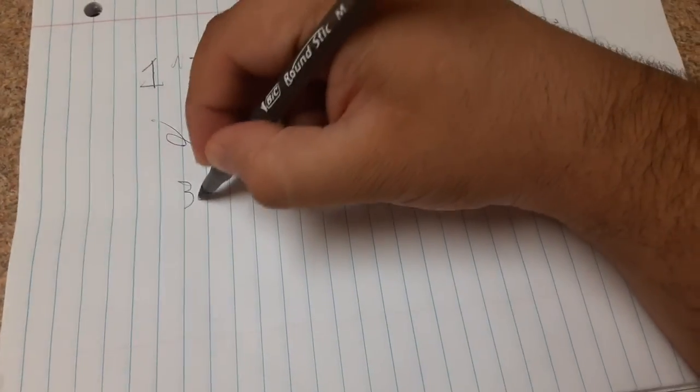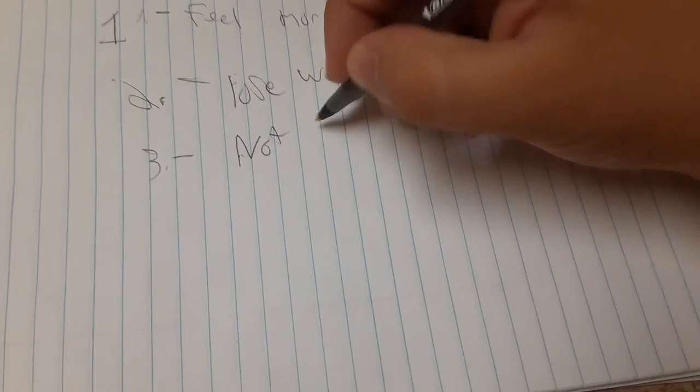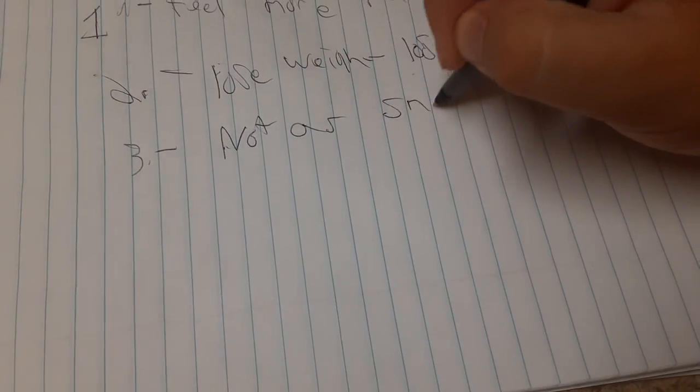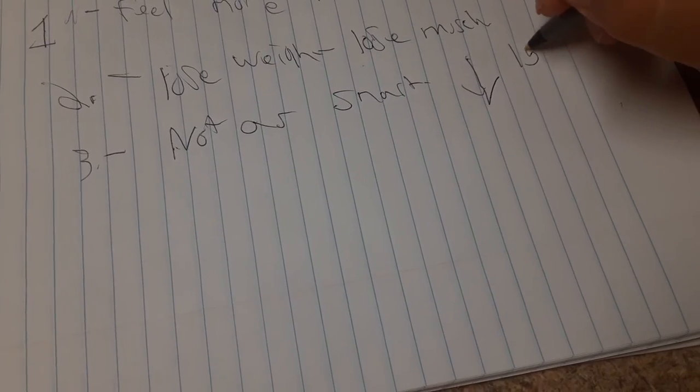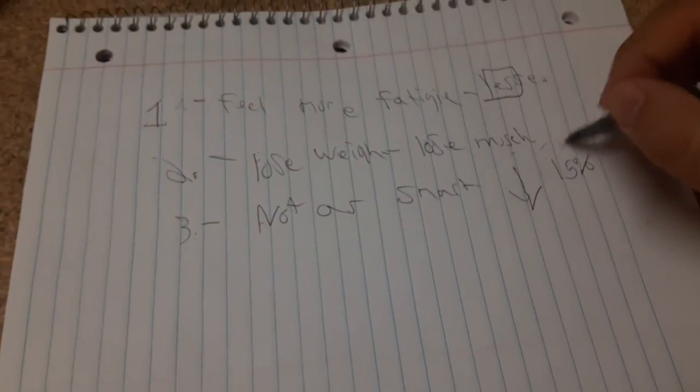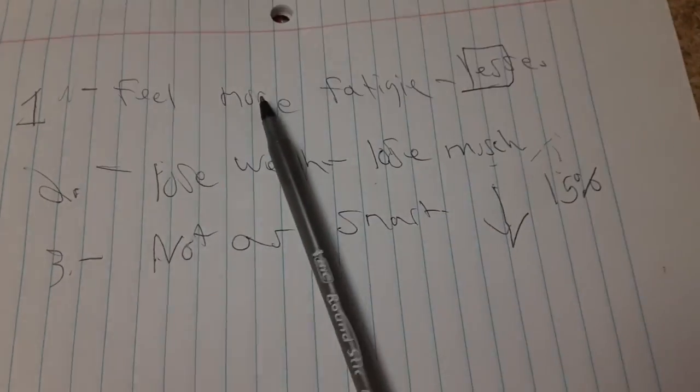Three, you're not gonna be as smart, so your IQ might drop 15%. Okay, these are some of the things that will happen to you if you stop eating sugar for 14 days.